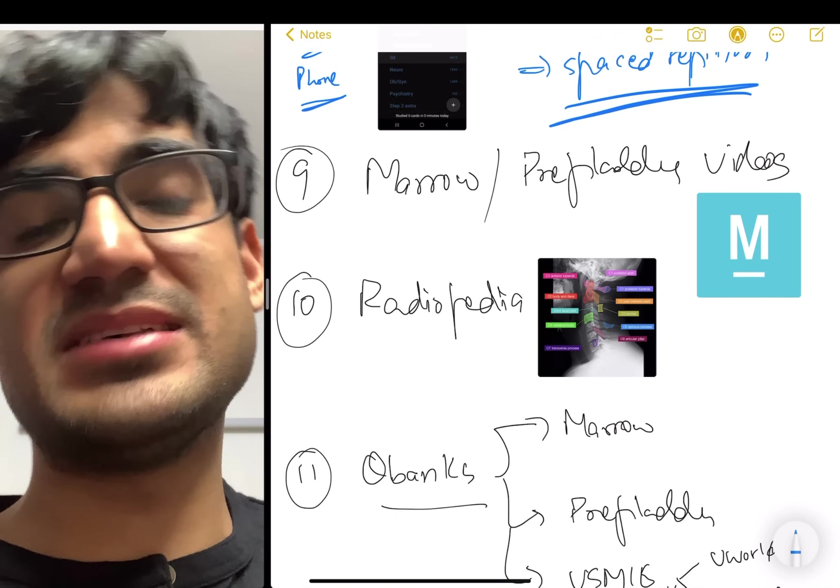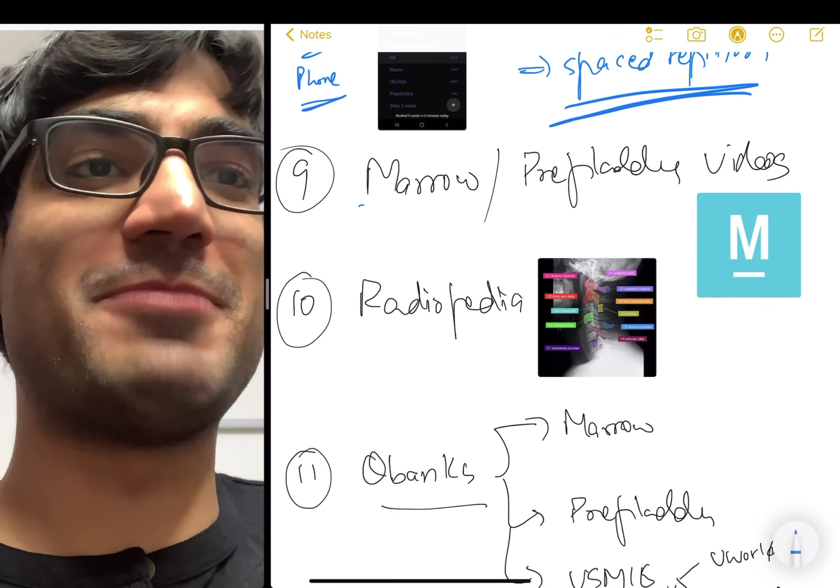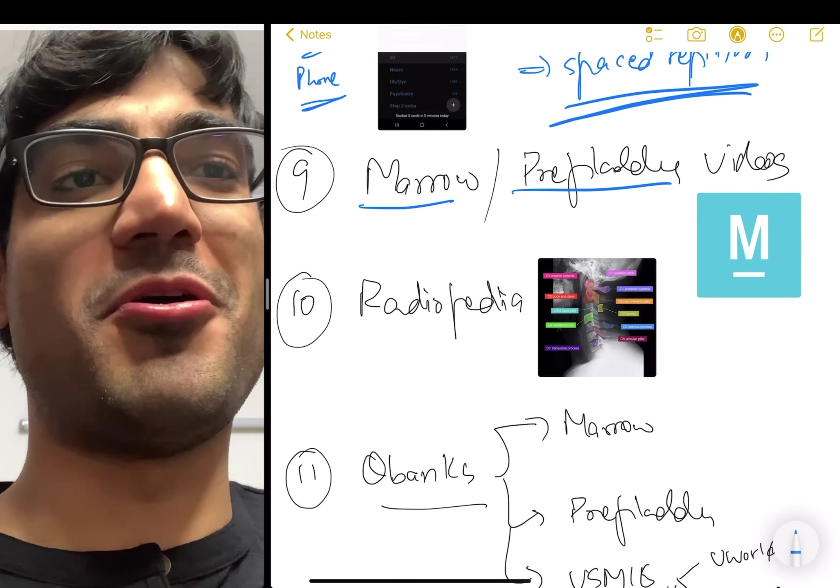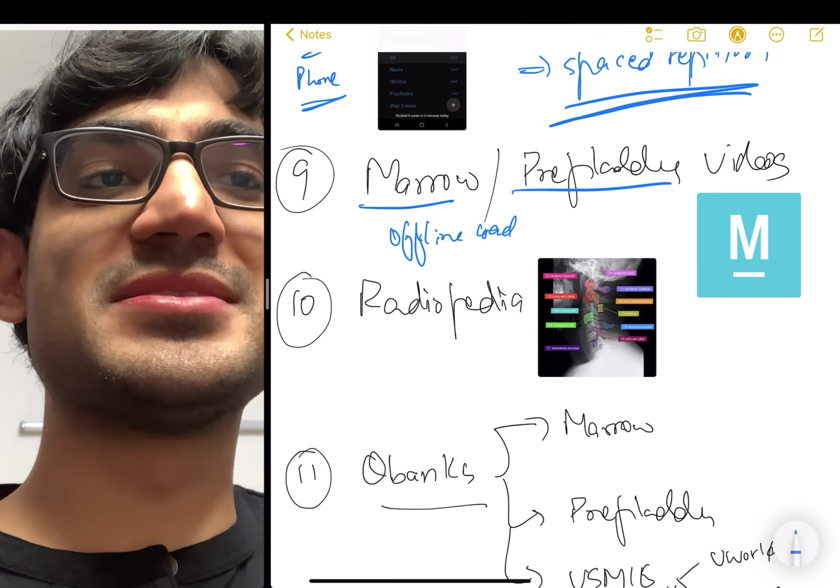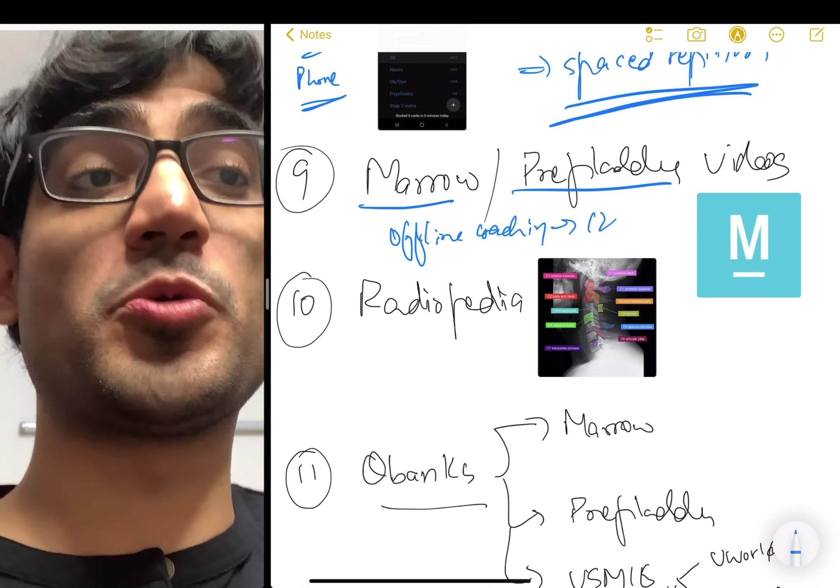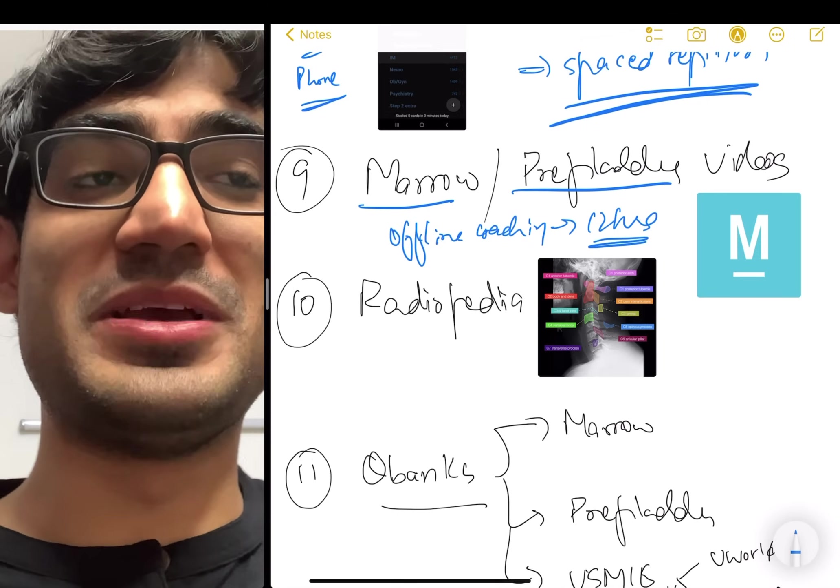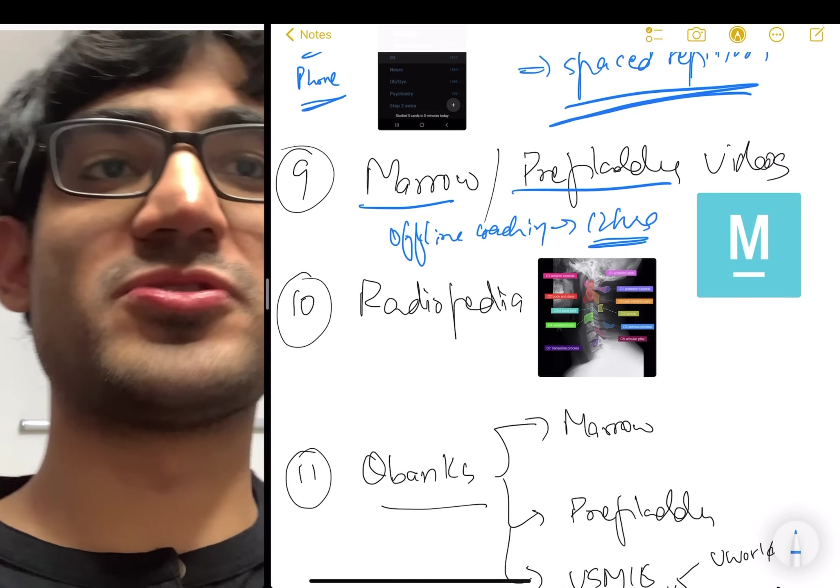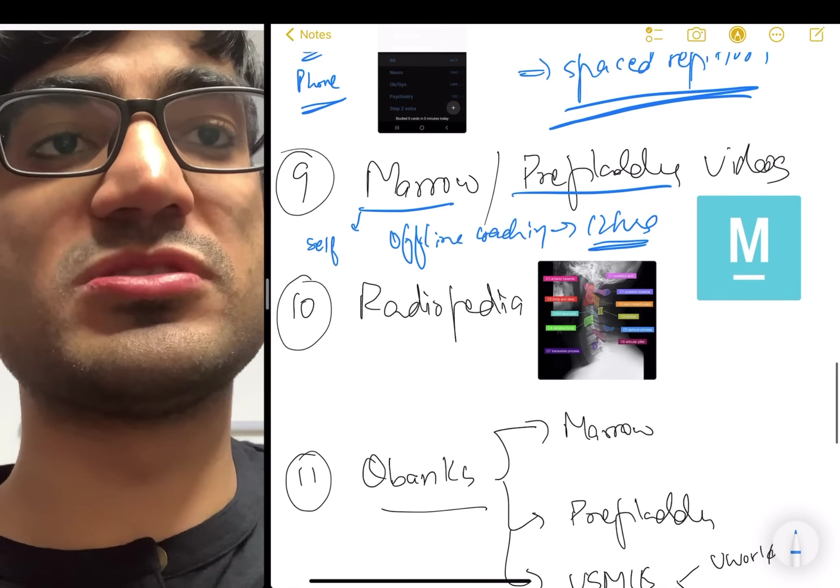The ninth resource that I would highly recommend is Marrow and Prep Ladder videos. Now, one of the best part that happened in this time is Marrow and Prep Ladder because they eliminated the need for offline coaching. And I really, really don't like offline coaching because then you have to sit there for like 12 hours and you don't even retain a lot of information. And it just feels like a lot of waste of time. With Marrow and Prep Ladder, you can self-pace your preparation, which is so really helpful.